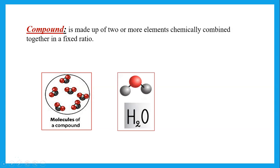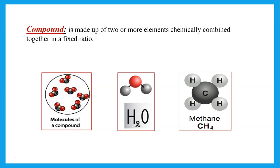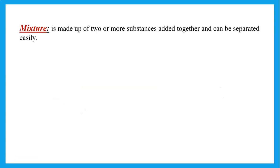For example, in water we have two hydrogens and one oxygen chemically combined together — that is a compound. Or methane, which is made up of carbon and hydrogens chemically combined together. These are examples of compounds.